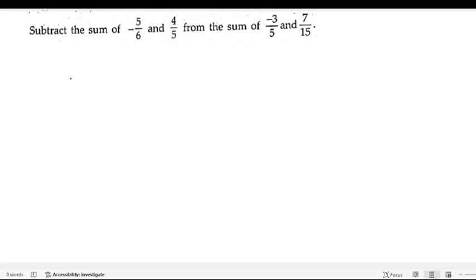Next problem: subtract the sum of -5/6 and 4/5 from the sum of -3/5 and 7/15. So they have given two fractions. First we need to add them, then we need to subtract. So let us start the solution.